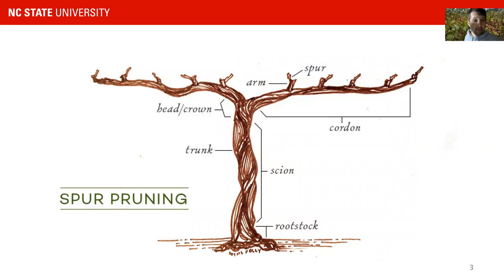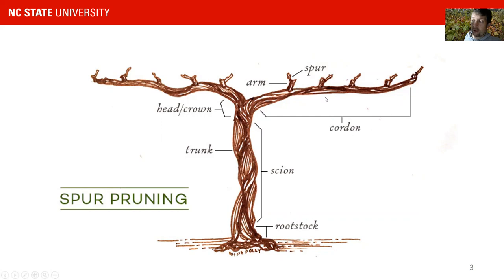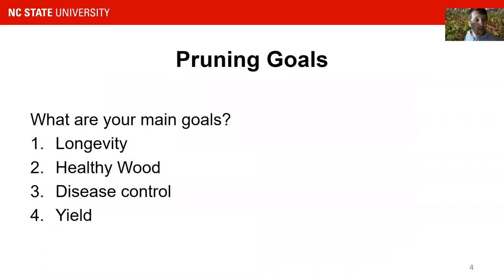Before we start, I would like to talk a little bit about the names which we use. We are on a spur pruning system with muscadines. Muscadines do have a trunk, a spur, and a cordon. These are the three terms which we use a lot over the next couple of minutes in this talk. Now I want to go over what the main goals of pruning are before we start talking about how to prune correctly.